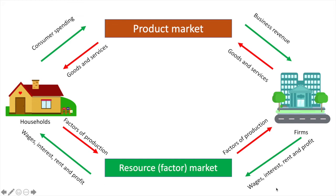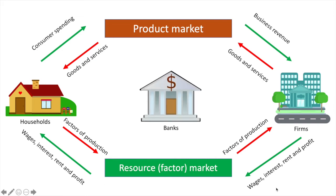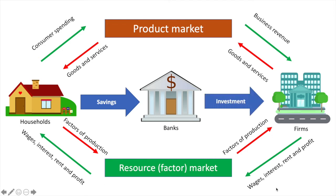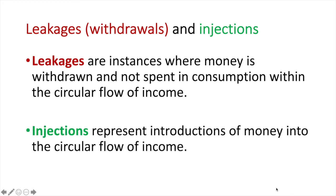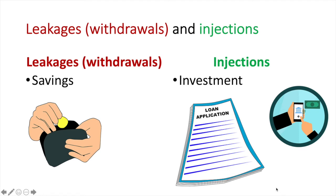Consumers do not typically spend 100% of their earnings. In the absence of government and international trade, consumers ultimately have two choices: buy goods and services from domestic firms, or save their money. If they place their savings into the bank, there is a decrease in the amount of money circulating in the circular flow. However, if firms borrow money from the bank and invest it to grow their business, there is an increase. Savings is considered a leakage or withdrawal from the circular flow. Leakages are instances where money is withdrawn and not spent in consumption within the circular flow of income. When firms borrow and invest, it is considered an injection — introductions of money into the circular flow. In the two-sector closed economy, we have savings as a leakage and investment as an injection.